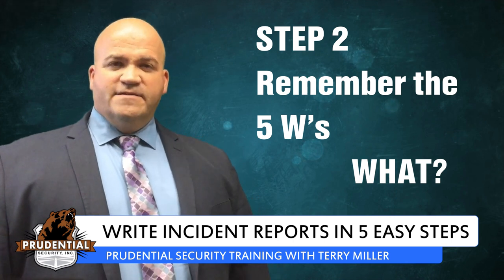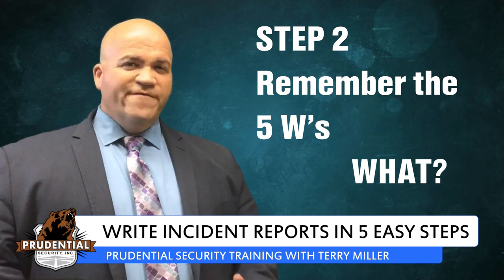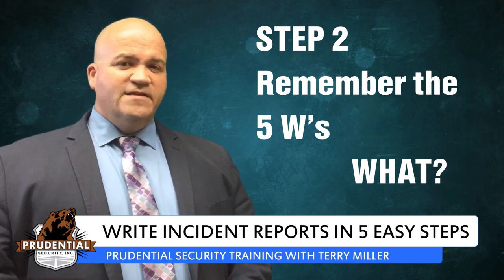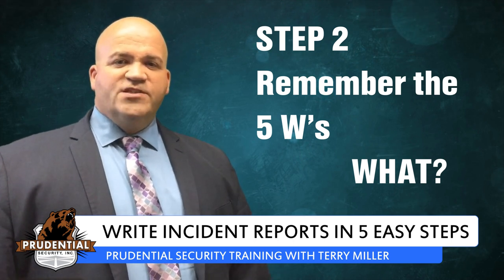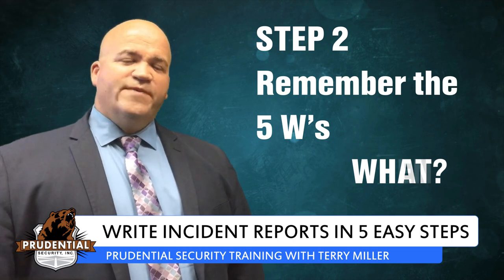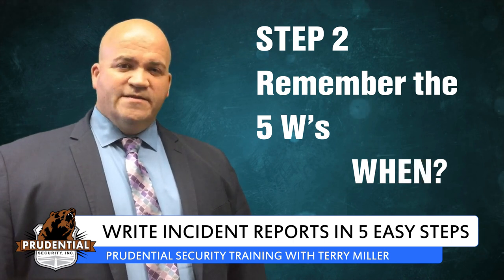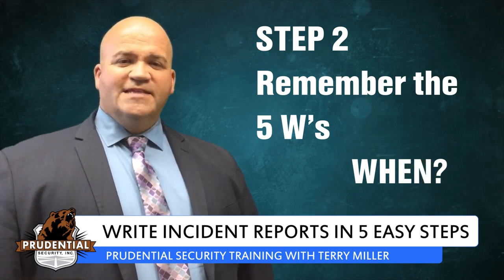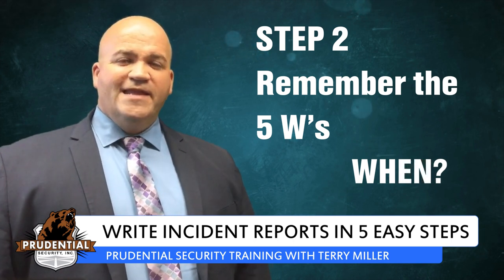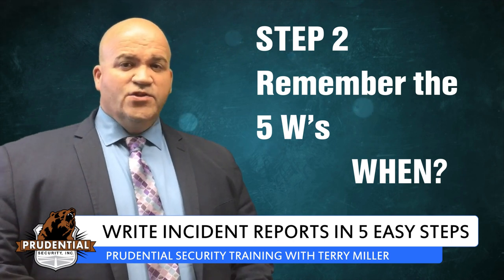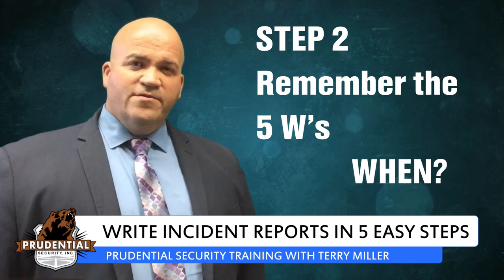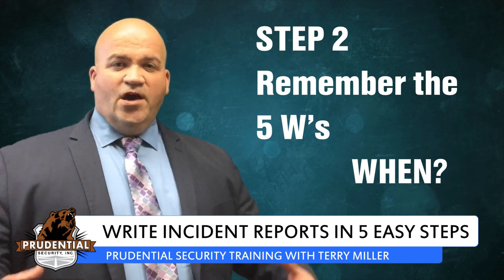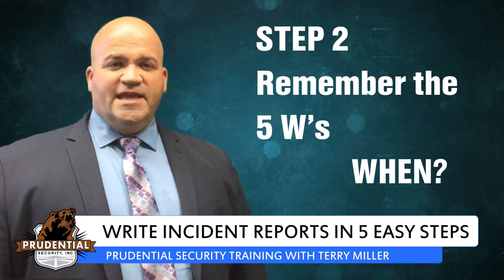The second being 'what' — what actions and events happened? Start from the beginning and go point by point, event by event, and include as much detail as possible on how each event unfolded. The third being 'when' — what date and time did the incident occur? Depending on the type of incident, you may also find it useful to describe the weather, lighting conditions, and other conditions in the area.